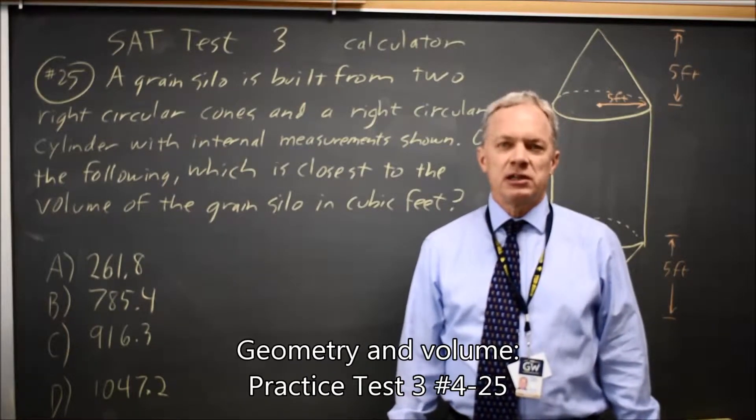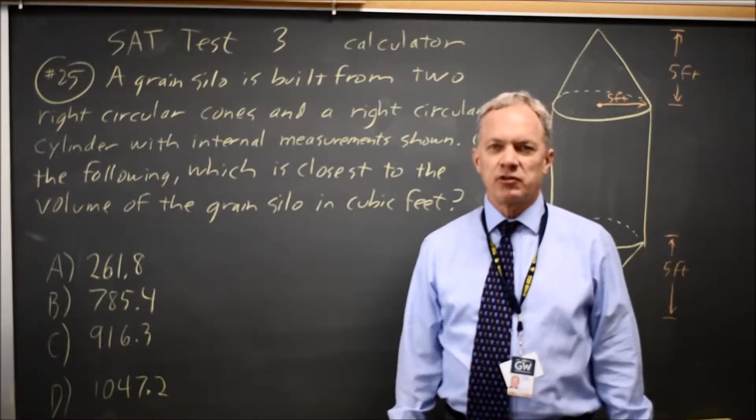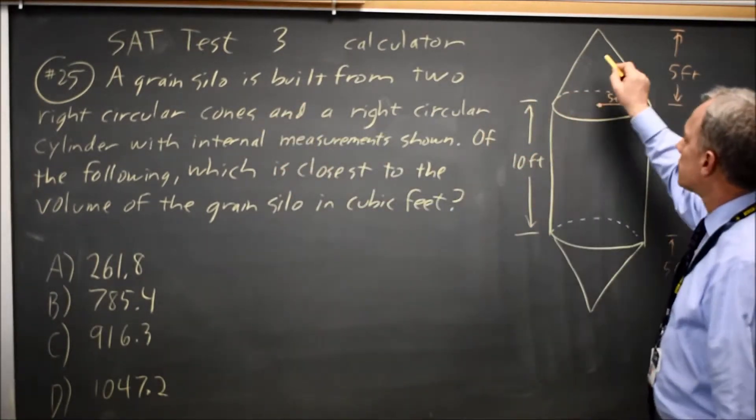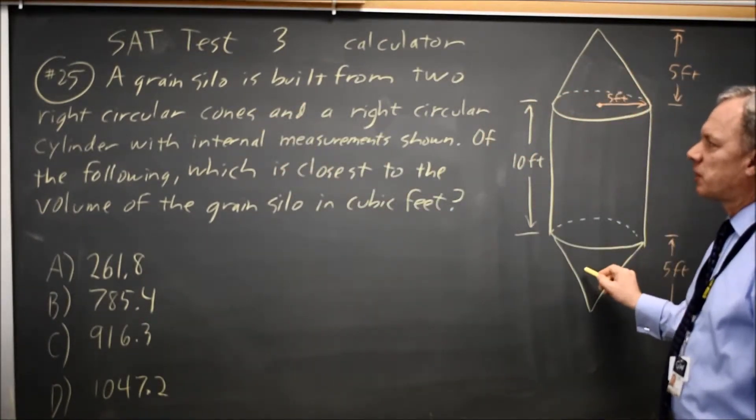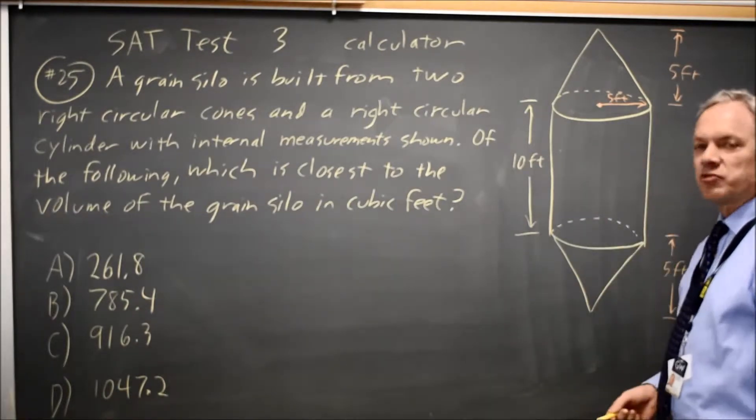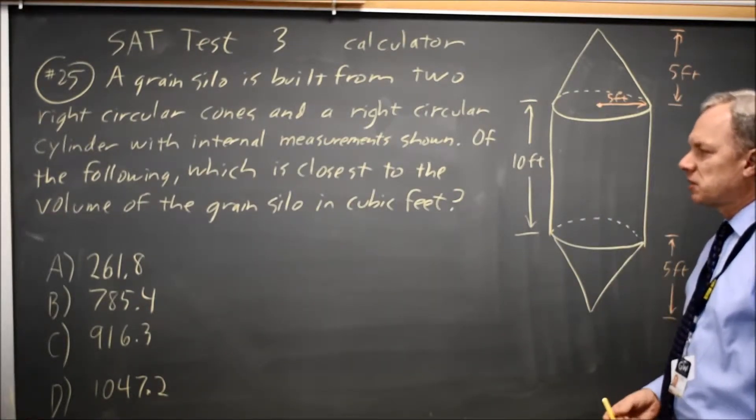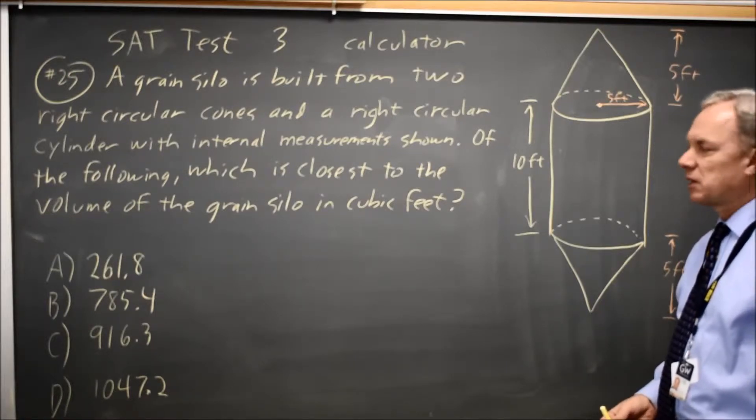This is SAT Test 3, Calculator section, Question 25. The College Board gives us a grain silo built from two right circular cones—one at the top, one at the bottom—and a right circular cylinder. They provide this drawing with the measurements labeled. Of the following, which is closest to the volume of the grain silo?